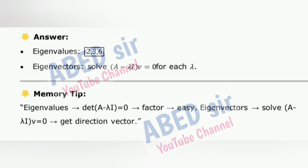Answer: eigenvalues are 2, 3, 6. Eigenvectors: solve (A − λI)v = 0 for each λ. Memory tip: Eigenvalues — det(A − λI) = 0, factor easily. Eigenvectors — solve (A − λI)v = 0, get direction vector.